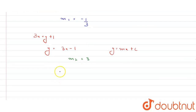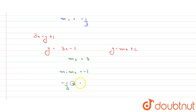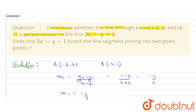We know that if two lines are perpendicular, their slopes' product m1 × m2 should equal -1. Checking: m1 = -1/3 and m2 = 3, so m1 × m2 = -1. Yes, we get -1, which means these two lines are perpendicular.